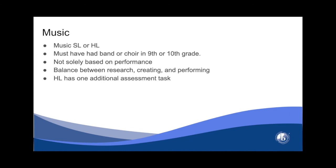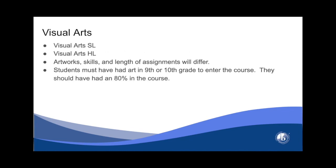Music can be taken at the SL or HL level, and those are combined. You must have had band or choir in 9th and 10th grade. If you did not, you'll have to submit a portfolio to the music department to be able to take this course at the DP level. It is not solely based on performance — there's a lot of research, creating or composing, and also a performance piece as well. The main difference is that HL will have one additional assessment task for the IB. Visual arts is offered at standard or higher level in the same class. The main difference is the number of artworks, length of assignments, and the skills being assessed between SL and HL.